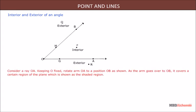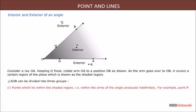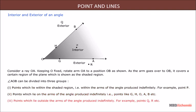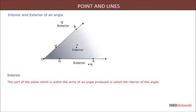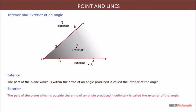Consider ray OA. Keeping O fixed, rotate arm OA to position OB. As the arm goes over to OB, it covers a certain region of the plane shown as the shaded region. Angle AOB can be divided into three groups: points which lie within the shaded region, within the arms of the angle produced indefinitely, such as point P; points which lie on the arms of the angle, such as points G, H, O, A, B; and points which lie outside the arms of the angle, such as points Q and R. The part of the plane within the arms of the angle is called the interior of the angle, and the part outside is called the exterior of the angle.